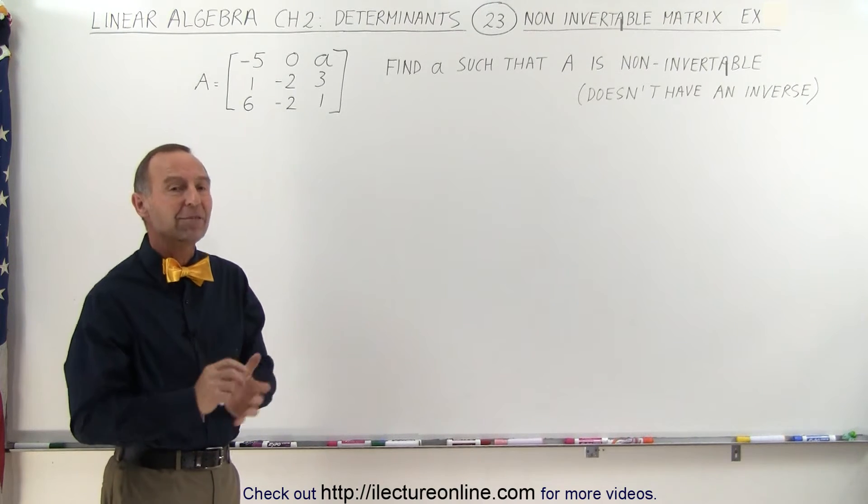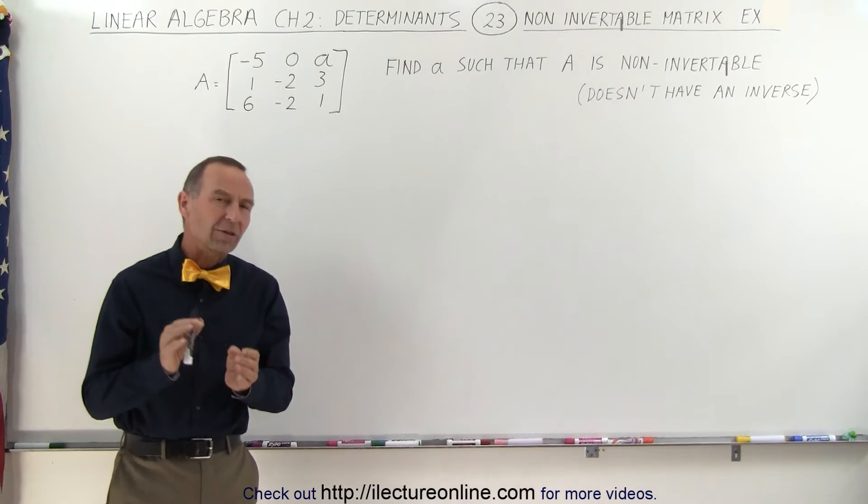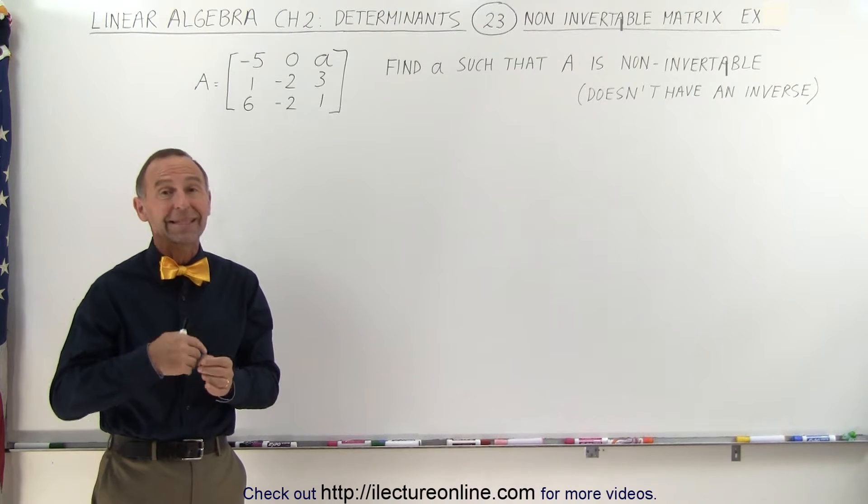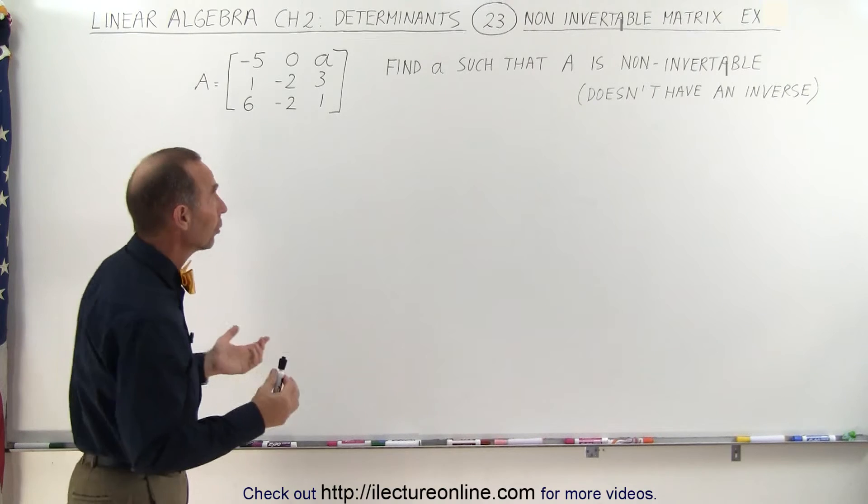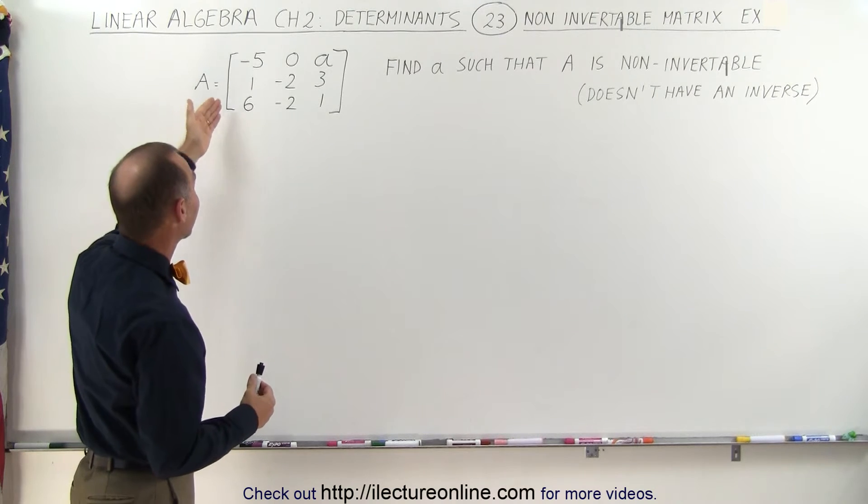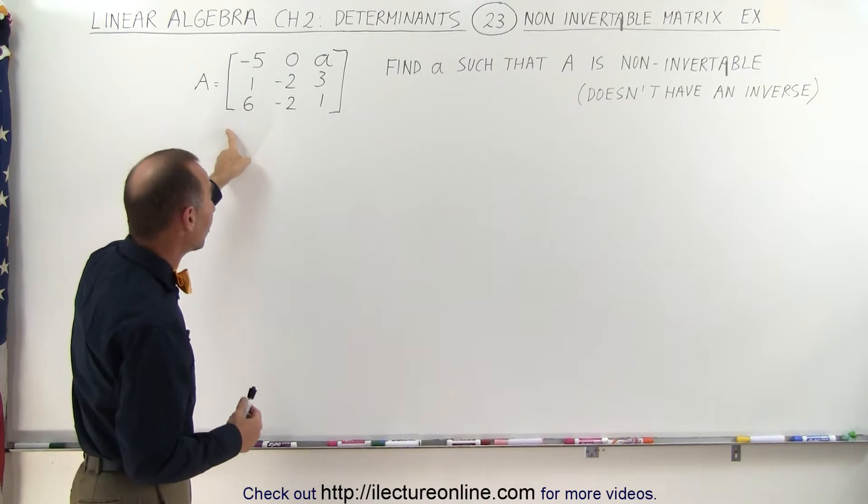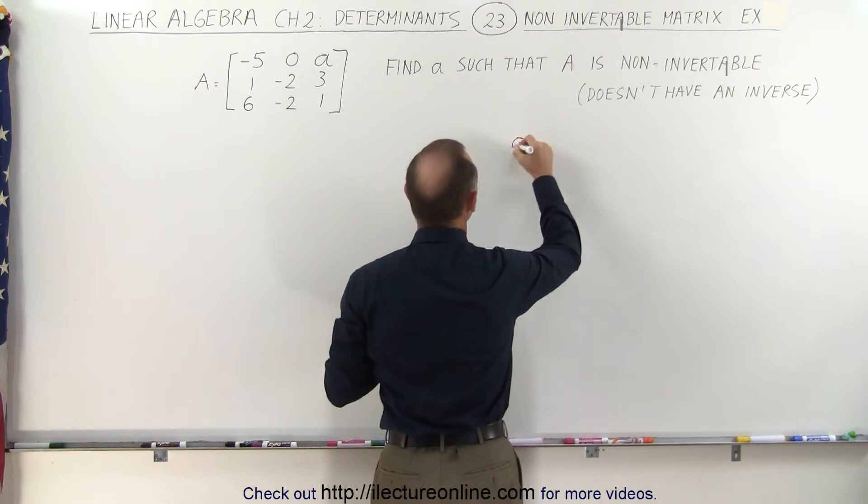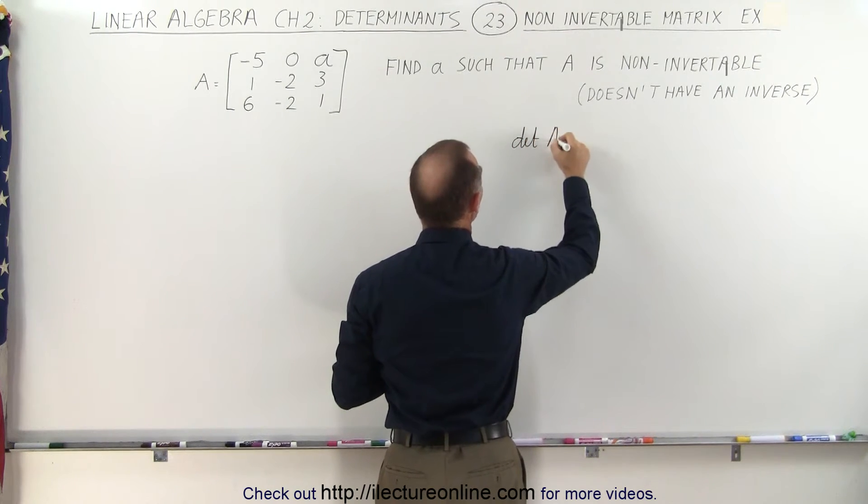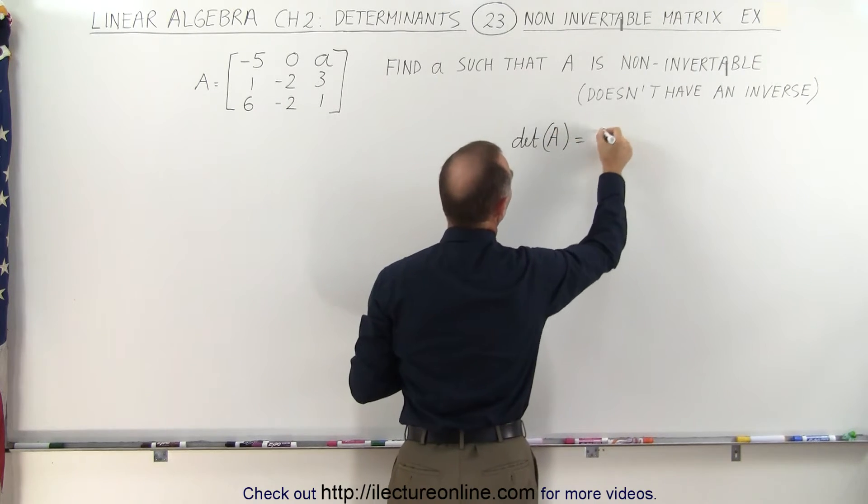That means it doesn't have an inverse. A matrix that doesn't have an inverse means that the determinant of the matrix has to be equal to zero. So in other words, we're going to set the determinant of this equal to zero and then solve for A.